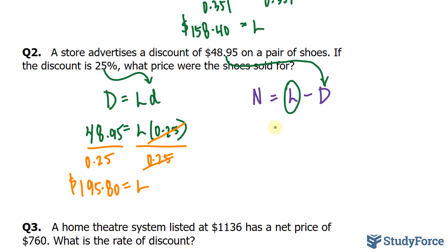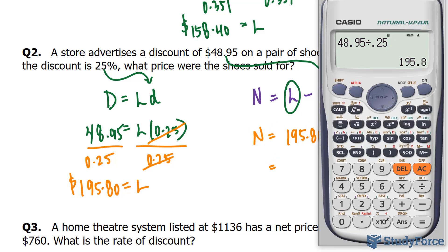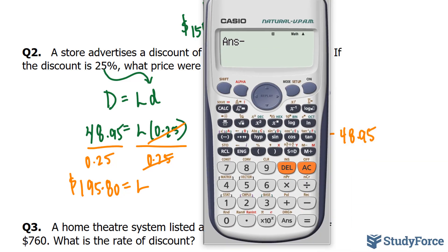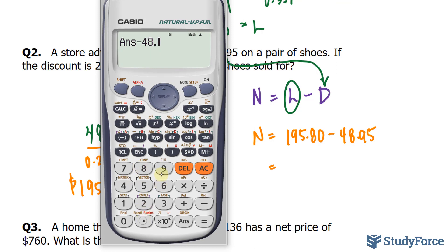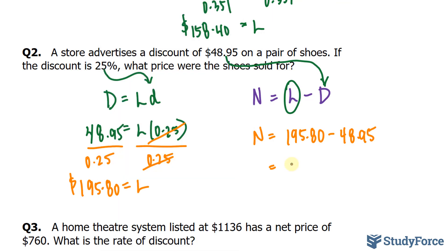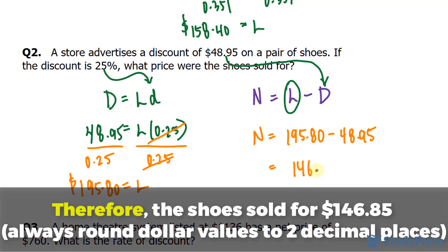All we have to do now is substitute that value into here, and subtract from it the discount, and this will be the price in which this item sells for. So, taking the number on our screen and subtracting from that, 48.95, and we get an answer of 146.85. Don't forget to conclude with a therefore statement.